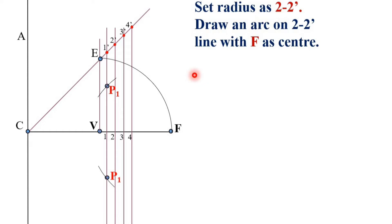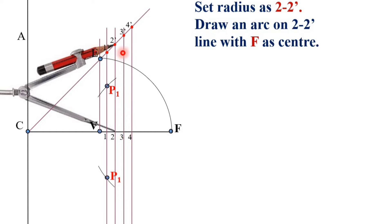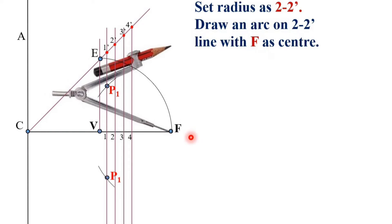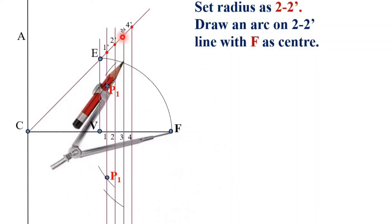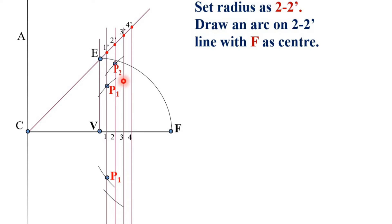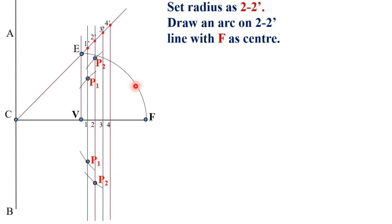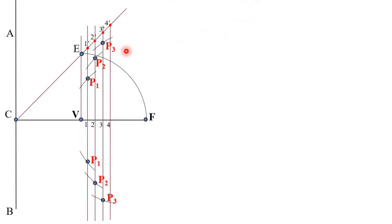Now change the radius to 2–2 dash. Set the compass and draw the arc with F as the center on the 2–2 dash line. You will get two intersection points — give the name P2 on both sides. Similarly, set the radius as 3–3 dash and draw the arc on both sides with F as the center to get P3. Similarly, you will get P4 on both sides.